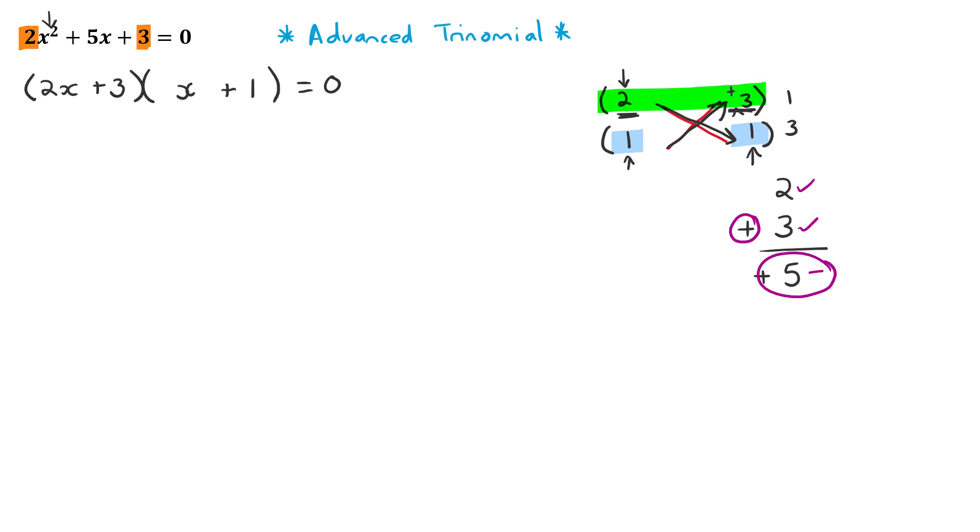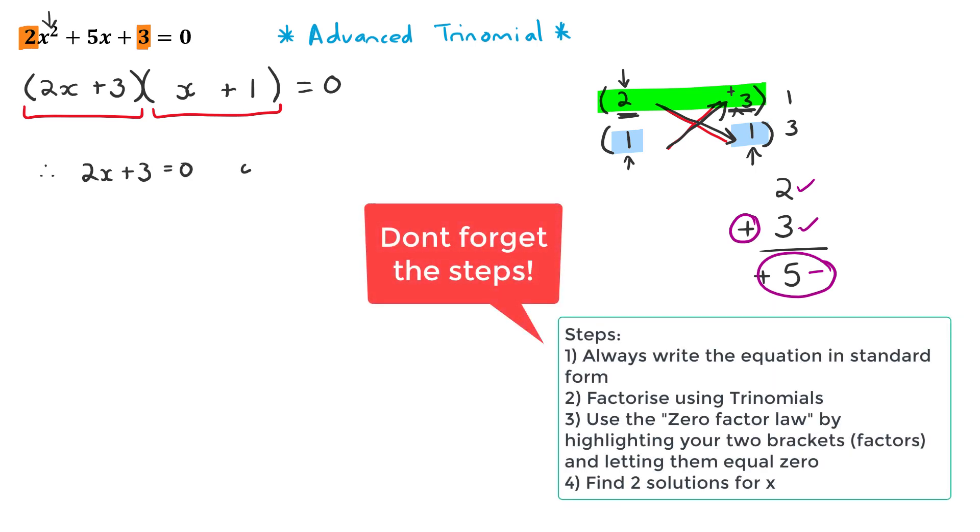Now that we've factorized our advanced trinomial so nicely, we can use our zero factor law. So we know that means look at the first factor, look at the second factor, write them down so that they become zero. So in other words, 2x plus 3 equals zero, or x plus 1 equals zero.